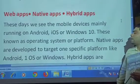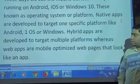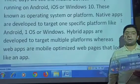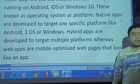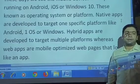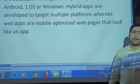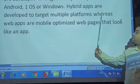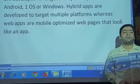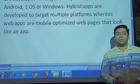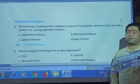Native apps are developed to target one specific platform, like Android, iOS, or Windows. Hybrid apps are developed to target multiple platforms — for example, WhatsApp is a hybrid app which runs on Apple, Android, and Windows. Web apps are mobile-optimized web pages that look like an app; some websites provide a mobile view which is used as an app.